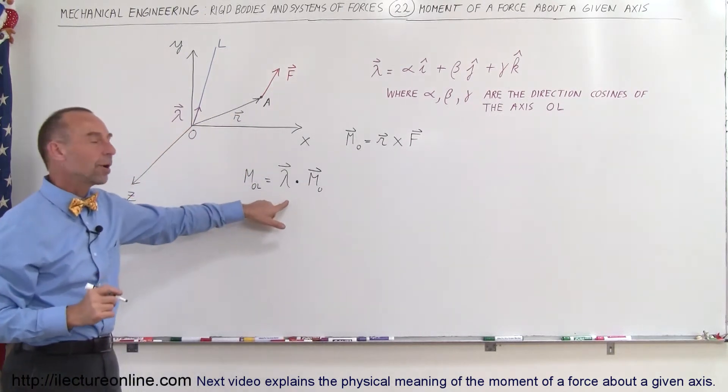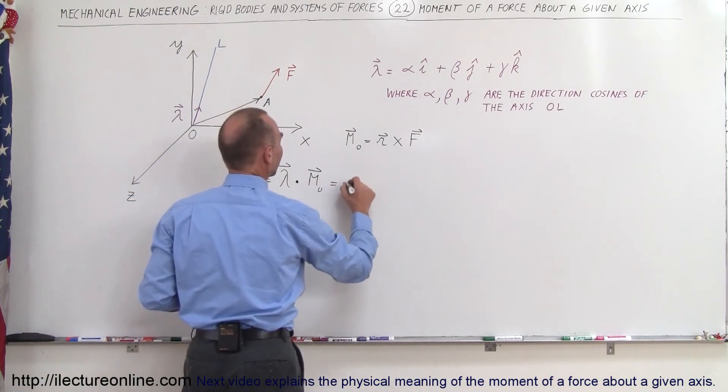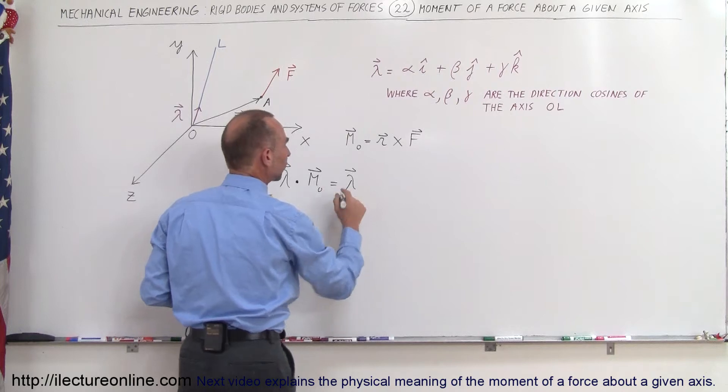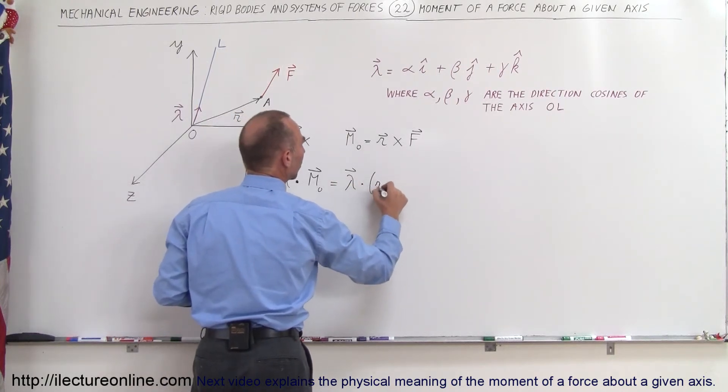It's a dot product quantity, so we get a scalar out of that. This can be written as the dot product of the unit vector along the axis of interest with r cross F.